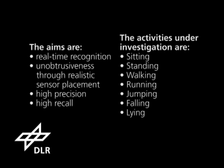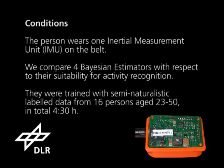The activities under investigation were sitting, standing, walking, running, jumping, falling, and lying. The person wears one inertial measurement unit, called an IMU, on the belt.